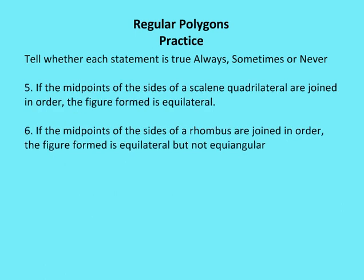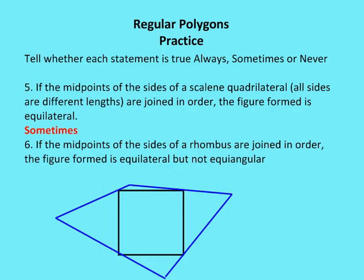Number five: if the midpoints of the sides of a scalene quadrilateral are joined in order, the figure formed is equilateral. A scalene quadrilateral is one in which all sides are not congruent. The answer is sometimes — sometimes the resulting figure will be equilateral and sometimes it won't, as demonstrated by drawing a square and connecting the midpoints of its sides.